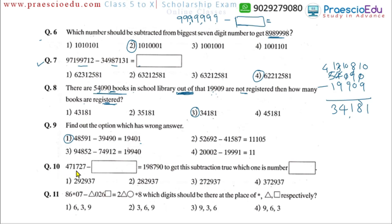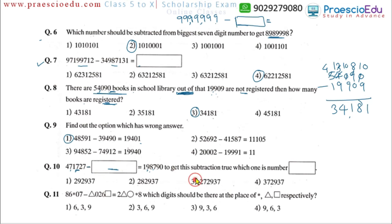Question number 10: 4,071,727 minus an empty box equals 1,098,790. To find the unknown number, we subtract the result from the total: 4,071,727 minus 1,098,790. Carry out this subtraction and you will get the correct answer, which is option number 3.